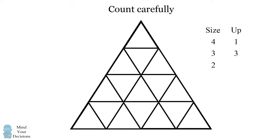How many triangles are there of size 2 facing up? The bottom row has 3, the next row has 2, and one row above that has 1. 3 plus 2 plus 1 is 6.